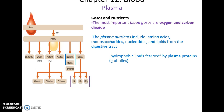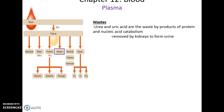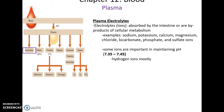Plasma also carries various gases — oxygen and carbon dioxide — as well as nutrients such as amino acids, monosaccharides, and nucleotides coming from the digestive tract, and hydrophobic lipids carried by the globulins. Waste products like urea and uric acid, byproducts from protein and nucleic acid catabolism, are removed by the kidneys as urine. Various electrolytes are present — sodium, calcium, magnesium, phosphate, and hydrogen ions — which determine the pH, ideally maintained at 7.35 to 7.45.